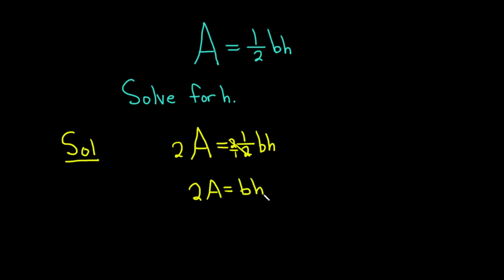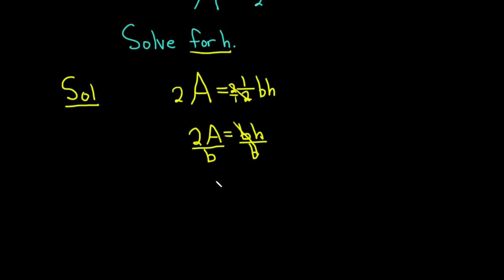And we're looking for little h. It's being multiplied by little b. So in order to undo that, to get rid of it, we have to do the inverse operation of multiplication, which is division. So we divide both sides by little b like this. Now these cancel, and so we're left with, on the left-hand side, we have 2A over little b. And that's equal to little h.